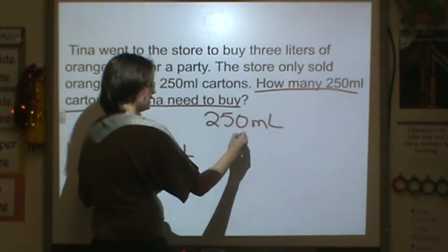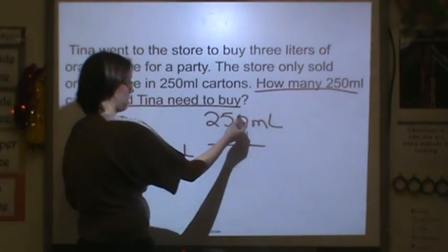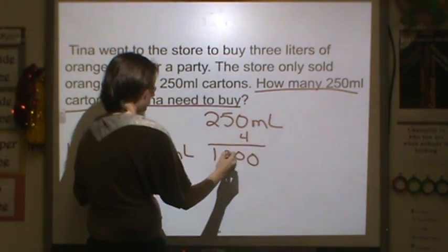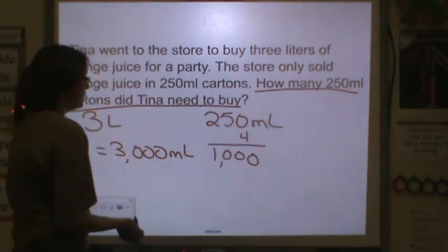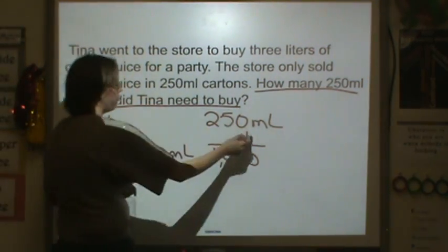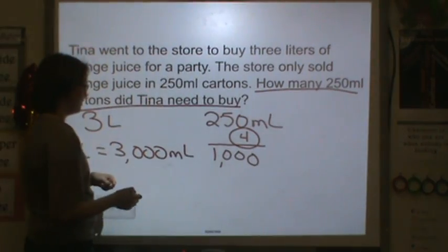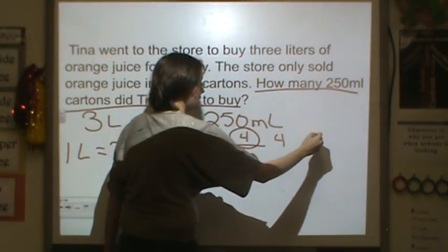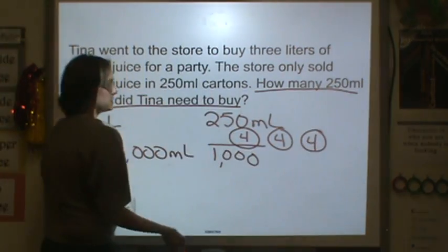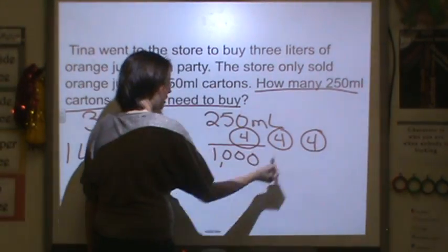I know that if I did 250 times four, I would get 1,000. Think quarters—25 times four is like a dollar, right? So we know that if there's four groups of 250, we get 1,000. We need 3,000, so we need two more groups of four. So 4, 4, and 4 is 12.